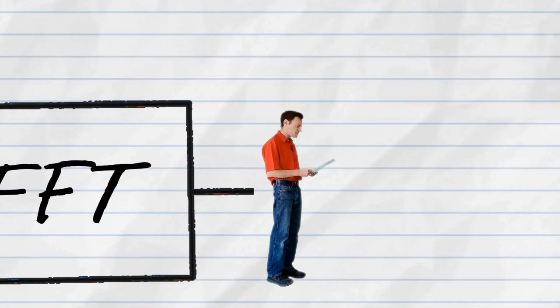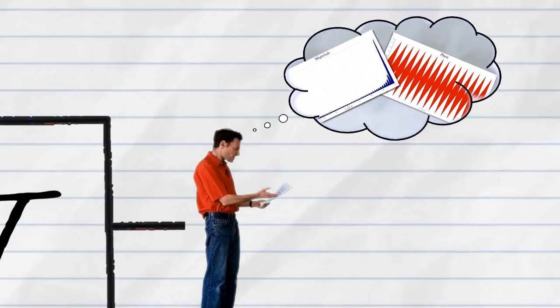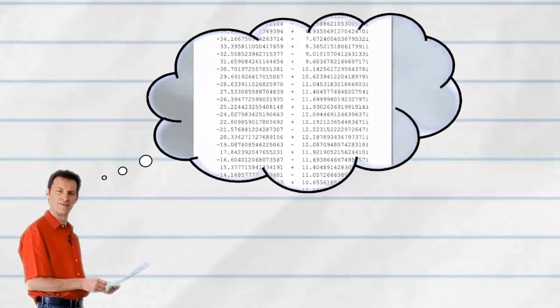But the output is not quite what you expected. What does this strange list of numbers mean? Where have the magnitude and phase graphs gone?